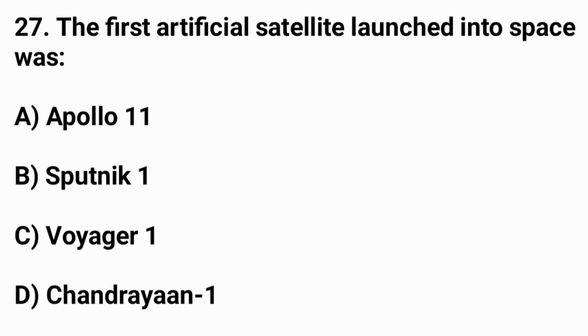Question number twenty-seven: The first artificial satellite launched into space was? The right answer is option B — Sputnik 1.